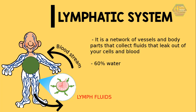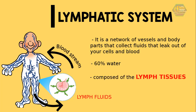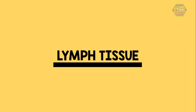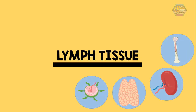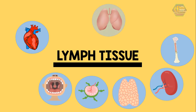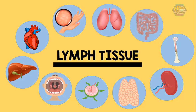The lymphatic system is composed of lymph tissues. The major parts of the lymph tissue are located in the bone marrow, spleen, thymus gland, lymph nodes, and tonsils. The heart, lungs, intestines, liver, and skin also contain lymphatic tissue.